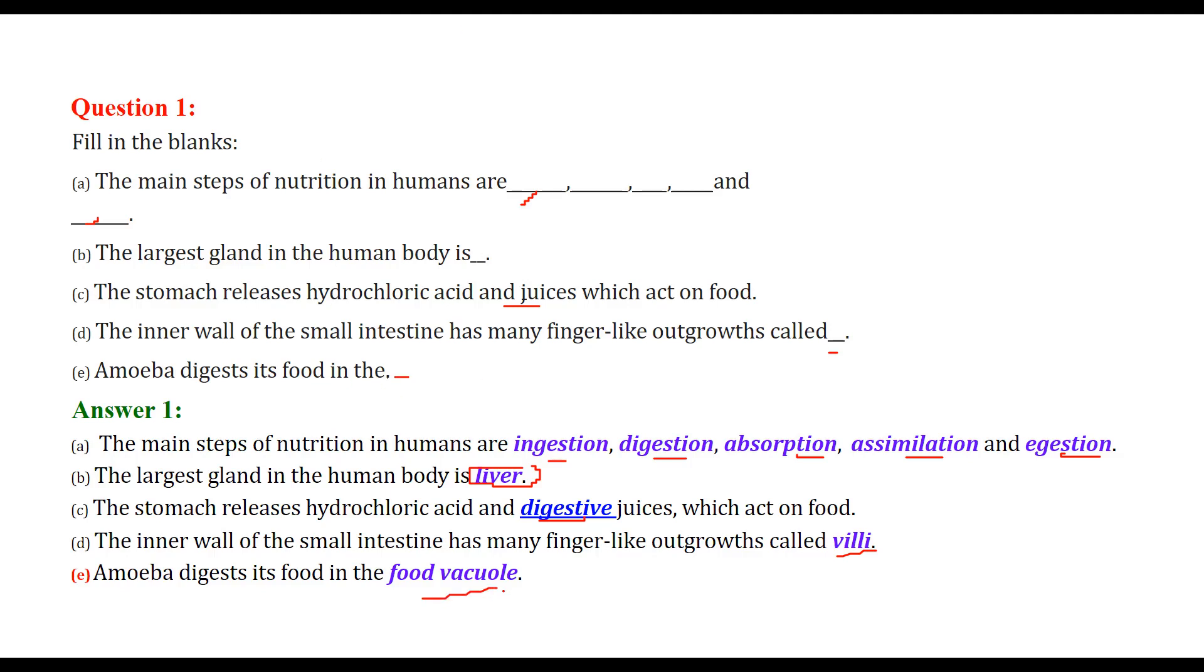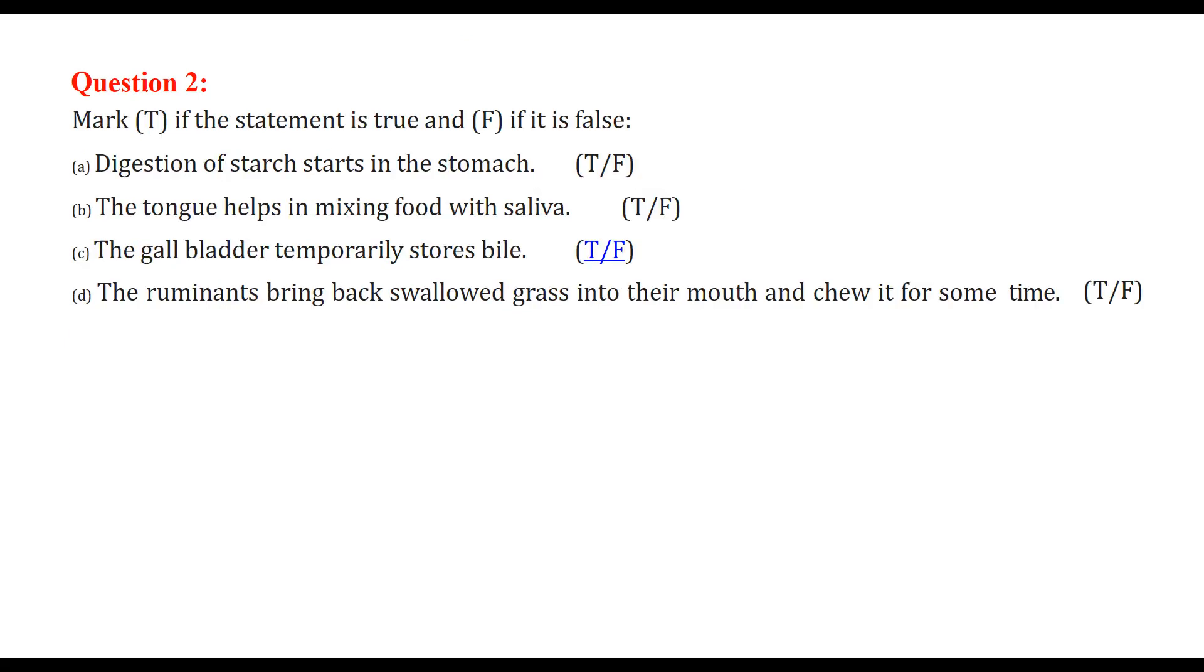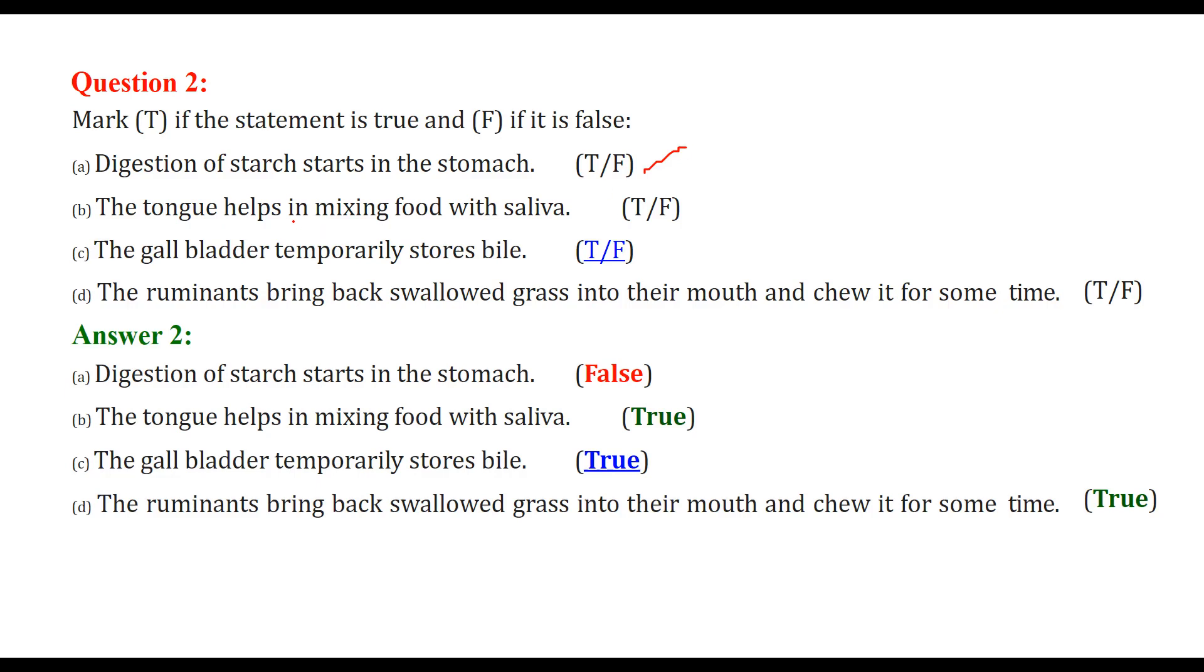True and false. Digestion of starch starts in stomach, and this is false. The tongue helps in mixing saliva with food. This is true because this saliva has digestive enzymes that will help us to digest the food properly.